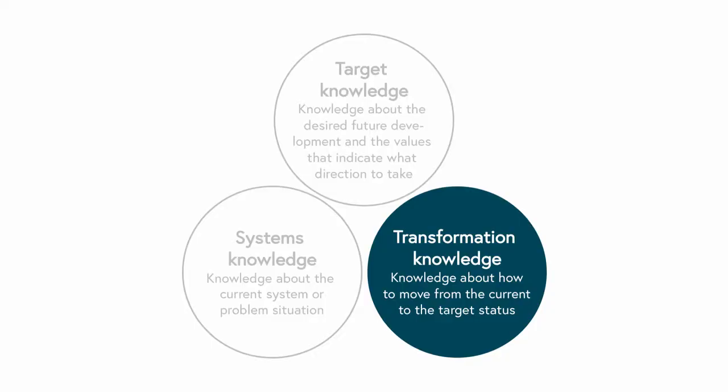Transformation knowledge is about how to move from the current to the target status. It includes the definition of concrete strategies and steps to take. If you think of the labour migration case, an example is the launch of roundtable meetings between Indian and Nepalese policy representatives, trade unions and NGOs to address migration issues at the policy level.